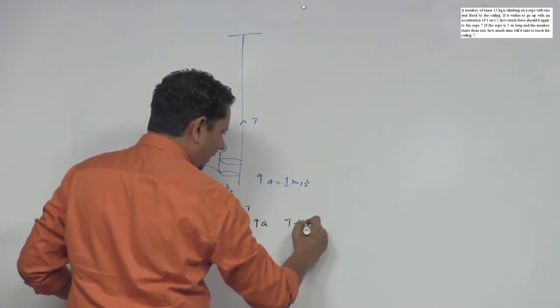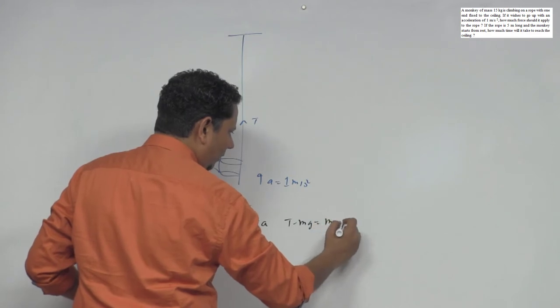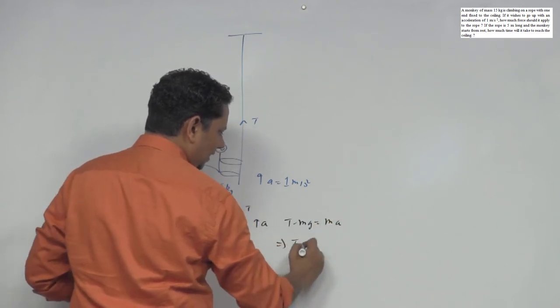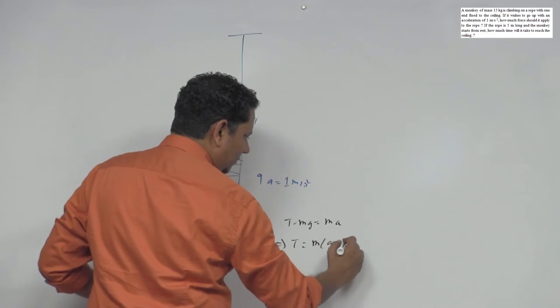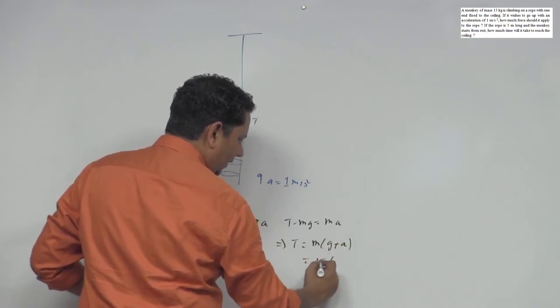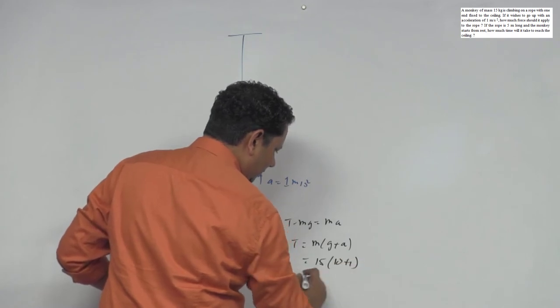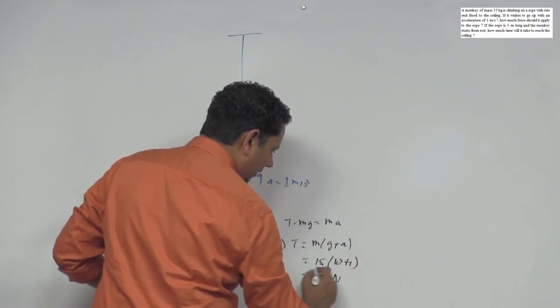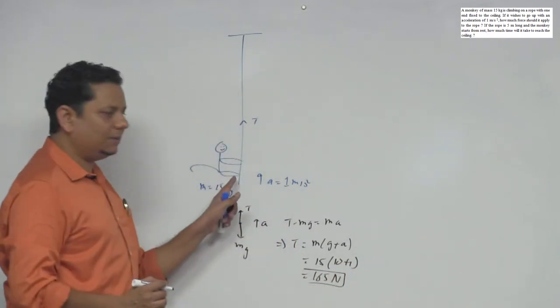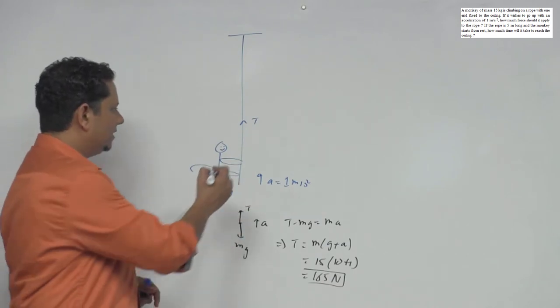This implies tension value will be mg plus ma. We're given m equals 15, and let's take g as 10, plus 1. So this becomes 165 Newtons. This much tension will be in the rope.